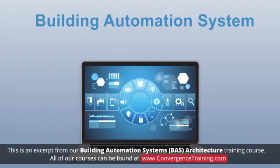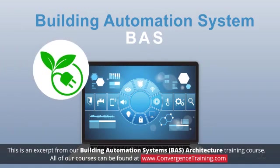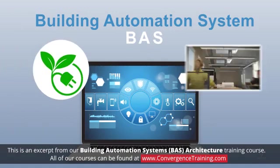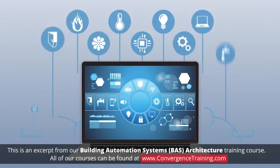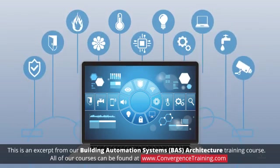The purpose of a building automation system, BAS, is to save energy and optimize occupant comfort in a building. It does this by centralizing the control of as many of the active components of a building as possible.